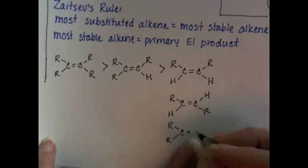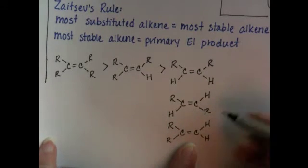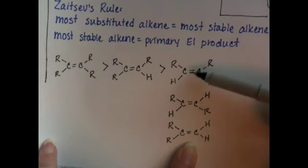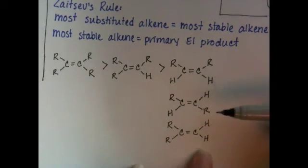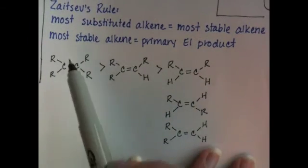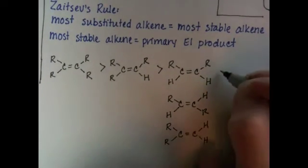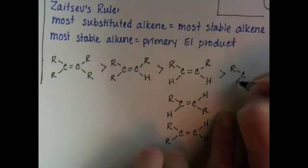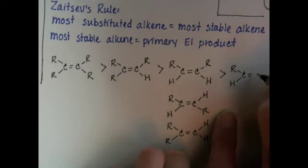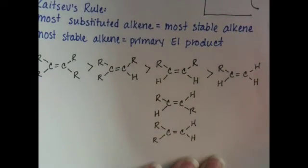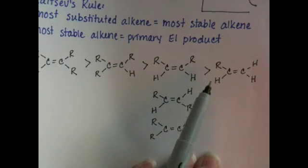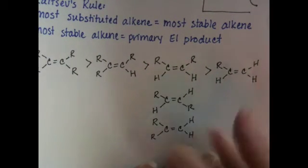In Chapter 6, we are going to consider all three of these situations as being equal in terms of their stability. In Chapter 7, we're going to learn that there is a difference between these three. But for now, we just want to focus on 4 versus 3 versus 2 versus 1, which is the least stable. Okay, so with that, with Zaitsev's rule and a really basic mechanism for E1, we're going to now do three pretty tricky examples.